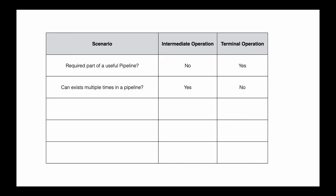The third difference is the return type. For an intermediate operation, when it finishes, the return type is a stream so that it can be handed over to the next intermediate operation. But for the terminal operation, the return type is not a stream — it depends on what you're trying to do. For example, if you have a stream of numbers and you're trying to compute an average, the return type is a number. If you want to convert it to a string, the return type is a string. The return type of the terminal operation depends on your business logic.